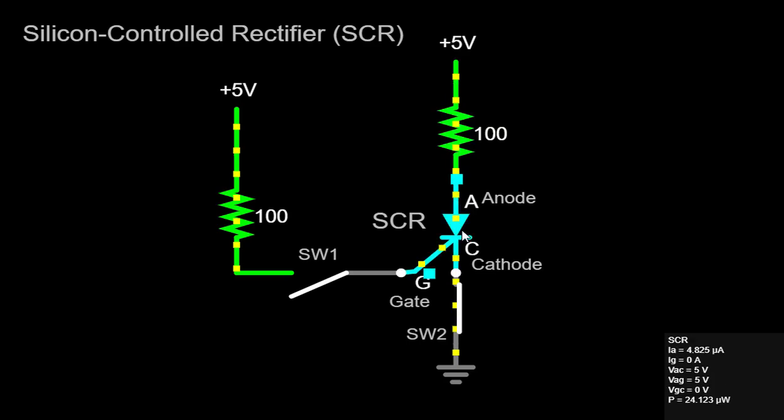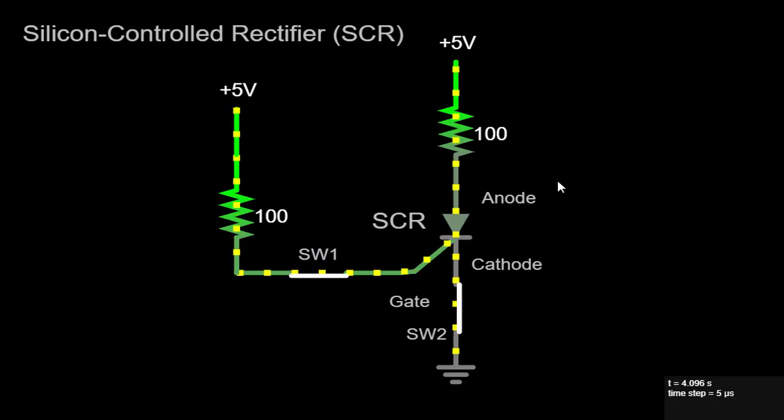It's important to note that at this stage, the SCR does not turn on instantaneously. To trigger the SCR and transition it into a conducting state, we need to apply a positive voltage pulse to the gate terminal using SW1. This voltage pulse acts as a trigger signal for the SCR, allowing it to enter a state of conduction.